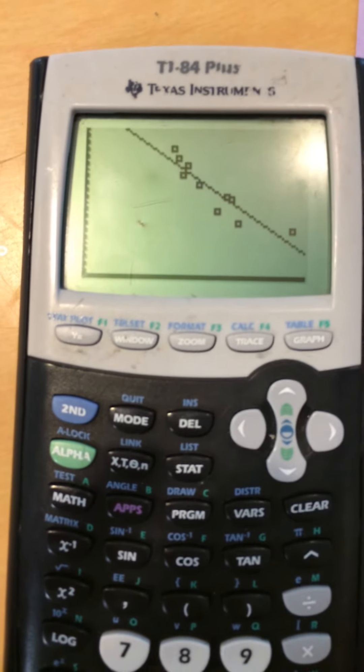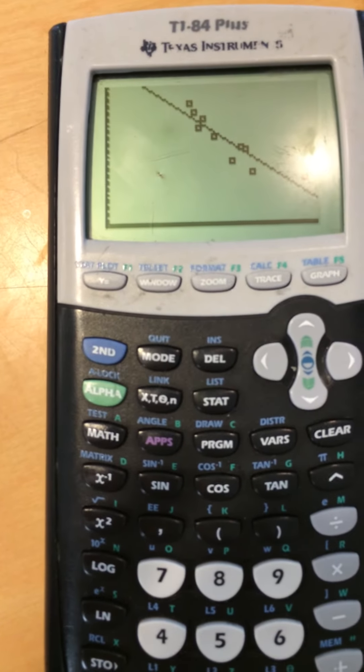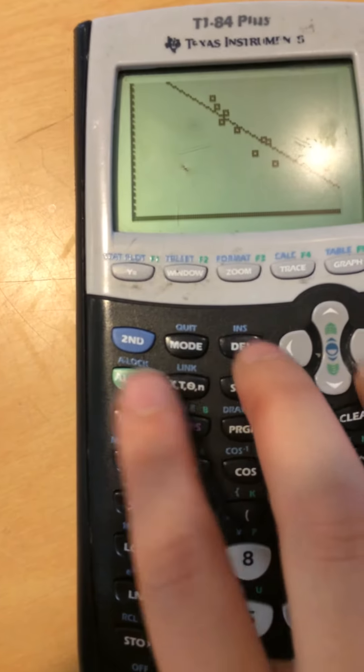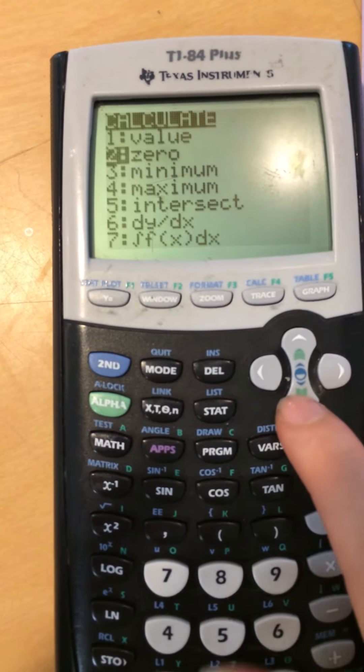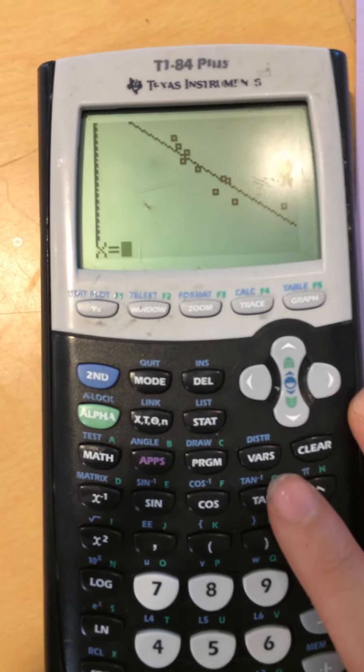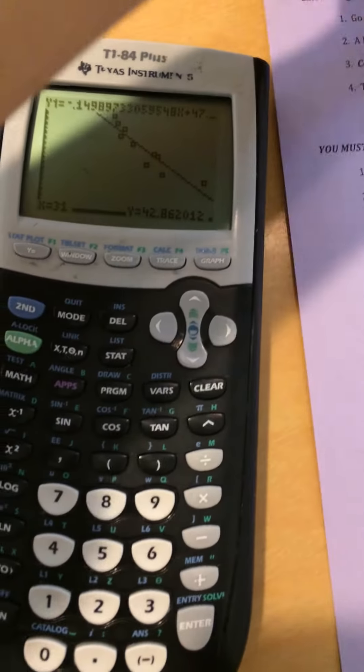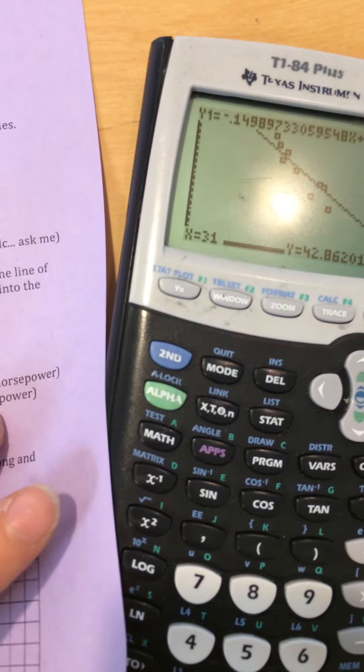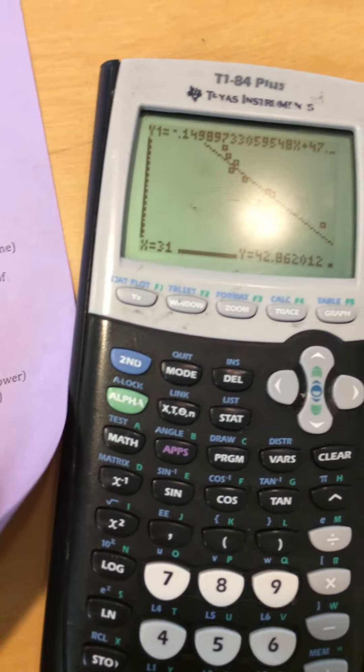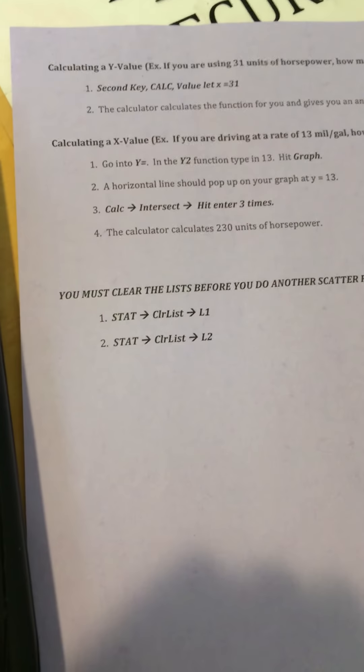But this is useful because the next thing this asks us to do on the back is to calculate a y value. So if you want to calculate any y value, you need to input its x. I want to calculate a value, not an intercept or min or max or intersection, a value. And I want to do it when x is 31. And I got that the corresponding y value is 42. So when the horsepower is 31, whatever those units are, I get 42.86 miles per gallon.